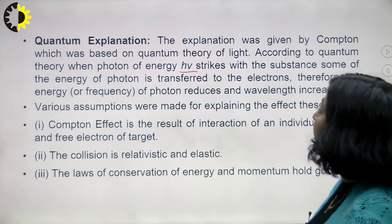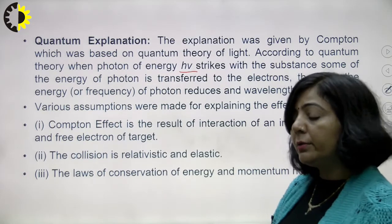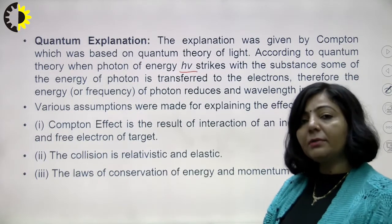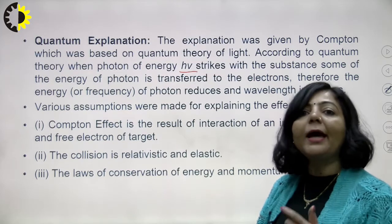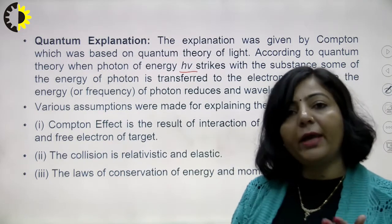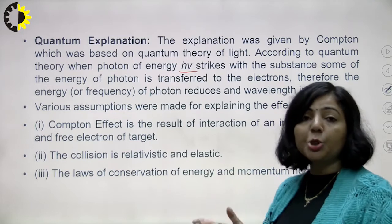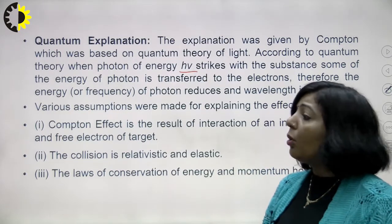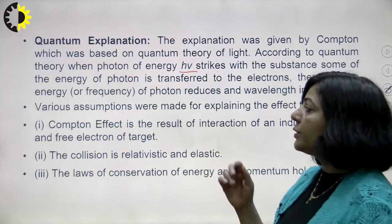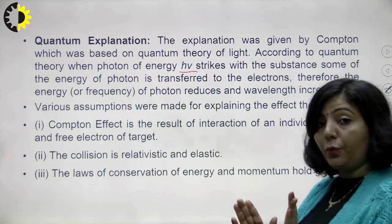Three assumptions were made for explaining the Compton Effect. The first assumption is that the Compton Effect is a result of the interaction between an individual photon (treated as a particle) and a free electron of the target. You can explain this effect only if you consider x-ray or gamma-ray photons as particles — that is why Compton's Effect is evidence for the particle nature of electromagnetic radiation.